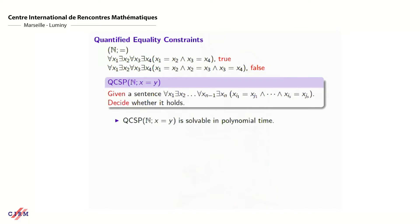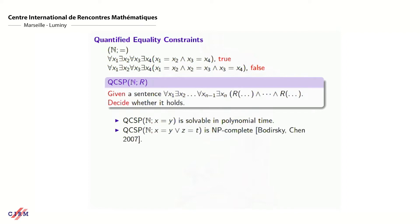We may consider a decision problem given a sentence where we have all quantifiers and a conjunction of equalities, and we need to decide whether the sentence is true or false. It's not hard to see that this problem is solvable in polynomial time, so it's easy. Instead of equality, we may consider any other relation R, and for other relations we get a different decision problem with probably different complexity. For example, if instead of R we put a disjunction of equalities, then this problem is NP-complete, as proved by Bodirsky and Chen. But if we replace disjunction by implication, this problem is P-space-complete.